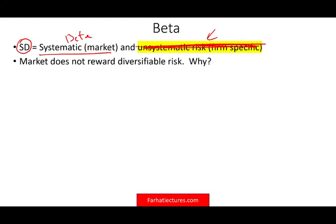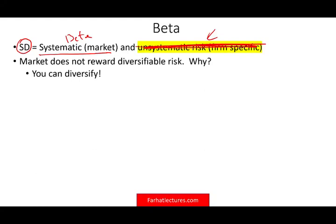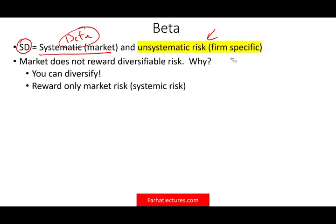The market says: if you take on unsystematic risk, we will not reward you. Why? Because you should be smart enough to invest in a diversified portfolio where you can get rid of unsystematic risk. If you can eliminate unsystematic risk in theory, we're only going to reward you for the systematic risk. Your reward is based on the beta. If you are a prudent investor, you should be able to get rid of unsystematic risk and keep only the beta, which is the risk you cannot diversify.